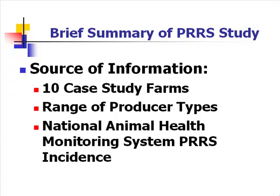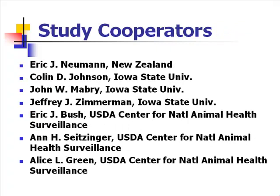Now let's spend a few minutes on the study we did on the economic analysis with respect to PRRS. The source of the information: there were 10 farms identified as having a PRRS outbreak, identified by the veterinarian working with the farm operation. The farm operations had detailed records, so we were able to pull off production efficiencies — what happened during the PRRS outbreak. We had a range of producer types in terms of farrowing operation from about 400 sows up to about 4,800 sows on site. We tied the information in with NAOMS to get information on what the population looks like.